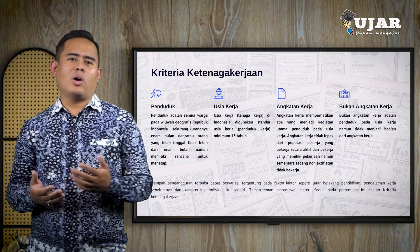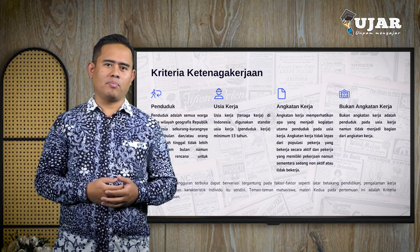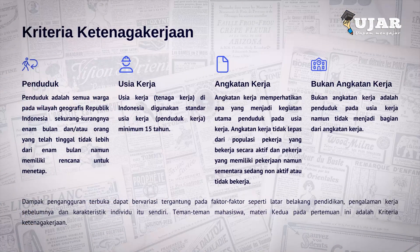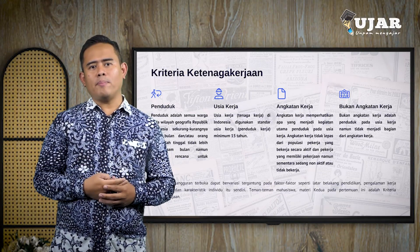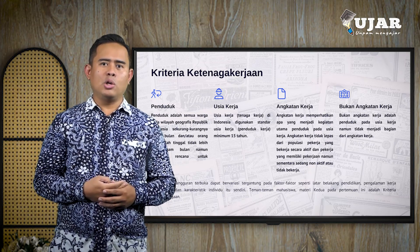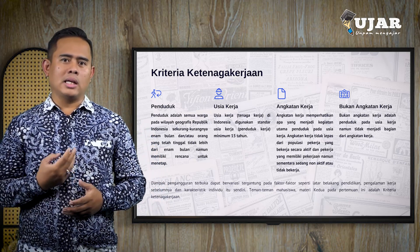Teman-teman mahasiswa, materi kedua pada pertemuan ini adalah kriteria ketenagakerjaan. Kriteria ketenagakerjaan adalah sebagai berikut. Yang pertama, adanya penduduk. Penduduk adalah semua warga pada wilayah geografis Republik Indonesia sekurang-kurangnya 6 bulan, atau orang yang telah tinggal lebih dari 6 bulan dan memiliki rencana untuk menetap. Yang kedua, usia kerja atau tenaga kerja. Di Indonesia, digunakan standar usia kerja penduduk minimum 15 tahun.